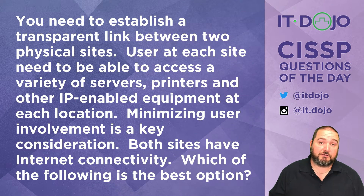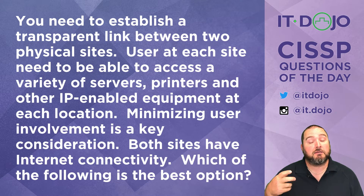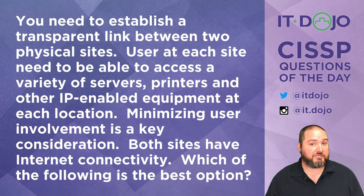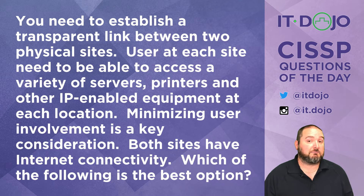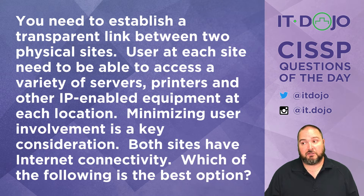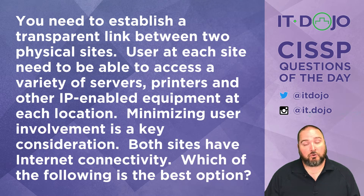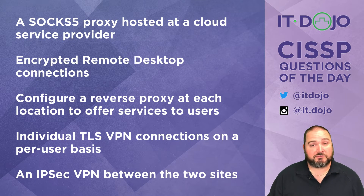Here's the situation: you need to establish transparent connectivity between two geographic sites in your organization. Users at each site need to be able to access servers, printers, and other IP-related resources at each individual site. You want to minimize as much as possible the amount of user interaction and intervention required. Both sites have internet connectivity. Given these criteria, which of the following choices is the best solution?